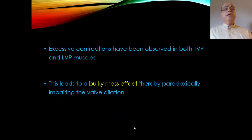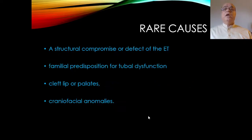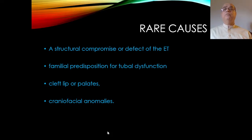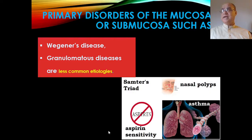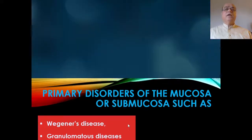Excessive contractions of both tensor veli palatini and levator veli palatini muscles have been observed, leading to a bulky mass effect that paradoxically impairs valve dilatation. A structural defect of the Eustachian tube can be a rare cause. Familial predisposition, cleft lip or cleft palate, and craniofacial abnormalities as seen in Down syndrome children are rare causes. Primary disorders of the mucosa or submucosa — such as Wegener's disease or other granulomatous diseases — can also occur.